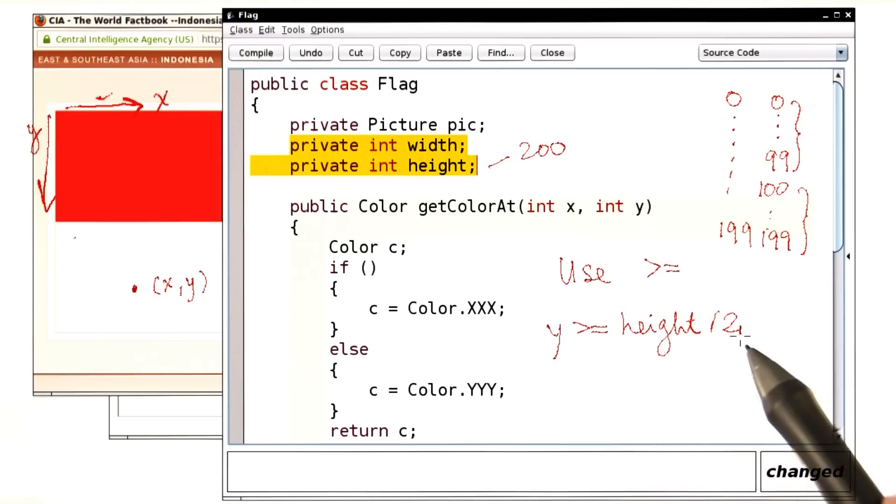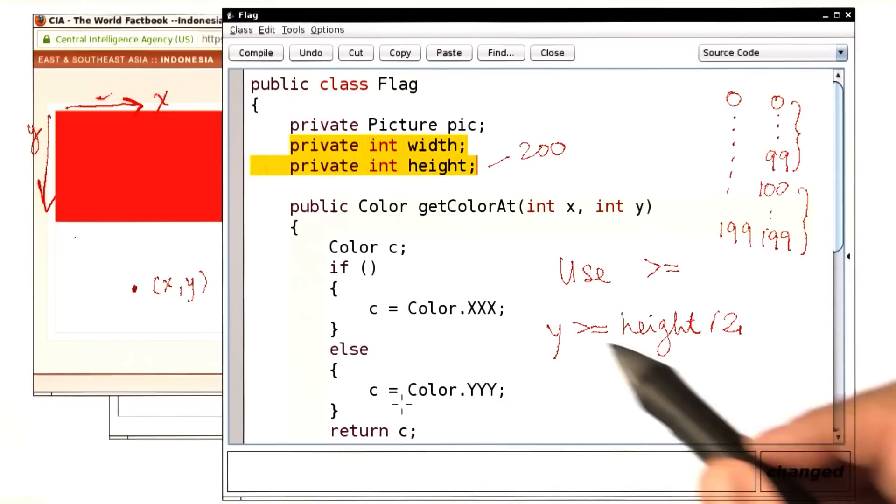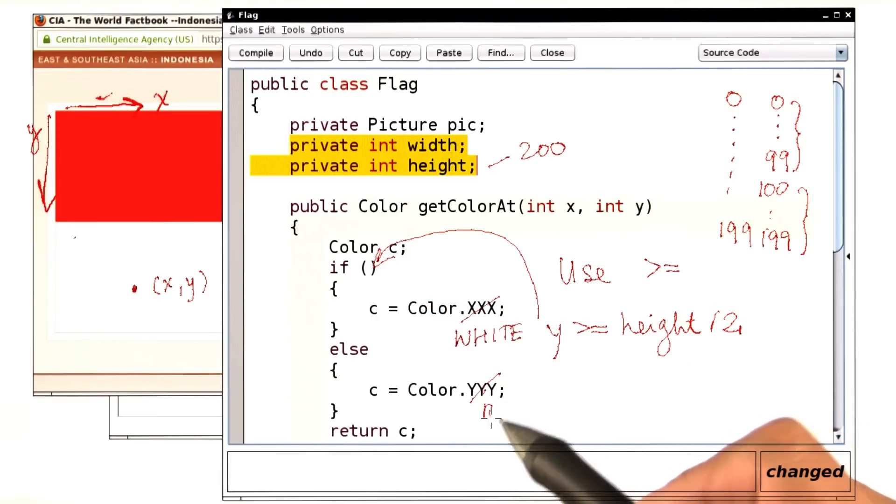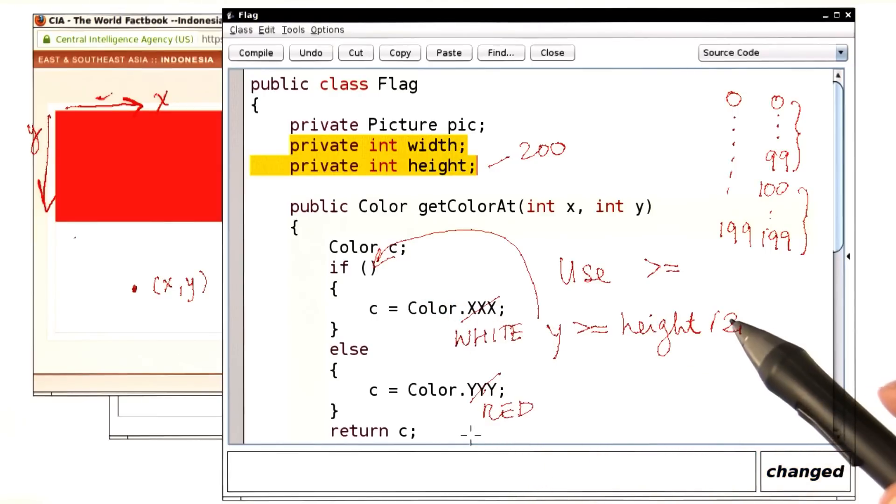So if height is 200, then height over 2 is 100. Greater or equal than 100 should give me white. So this is exactly the right condition. We'll put it in here. And otherwise, I want red. Let me put it in and demo it to you.